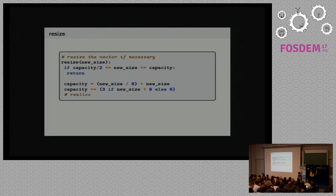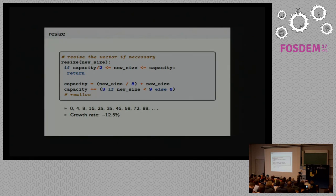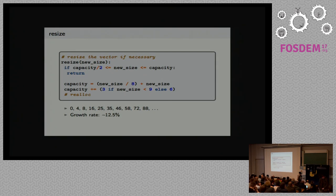The new capacity pattern is: new size over 8 plus the new size plus some rest. Once we have the new capacity, we call realloc to reallocate the list with the new capacity. This capacity pattern might seem weird — 0, 4, 8, 16, et cetera. But because of the new size over 8 term, the growth rate is about 12.5% when the list grows beyond a certain number of items. This 12.5% is a tradeoff between space and time. We want constant time insertion on average, but we also don't want to waste too much memory. That's just a tradeoff that's been made by CPython developers, and it seems to work.